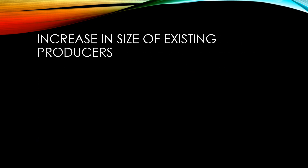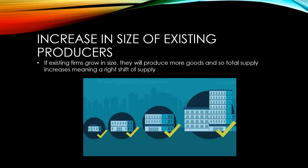If existing firms grow significantly in size, they will be able to produce more goods, and so total supply will increase, meaning a right shift of supply for the industry.